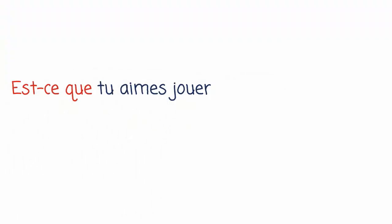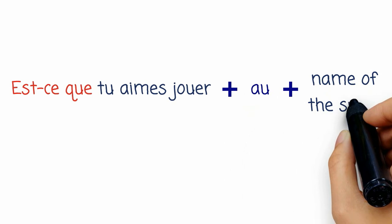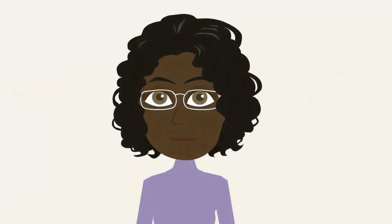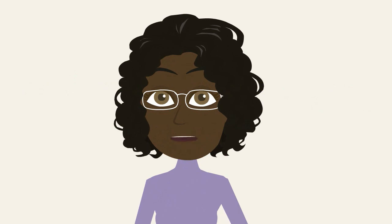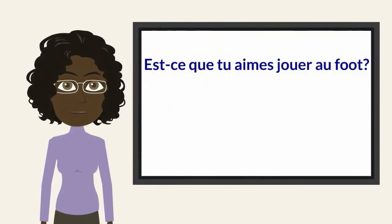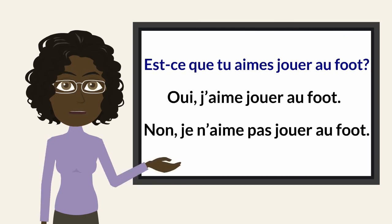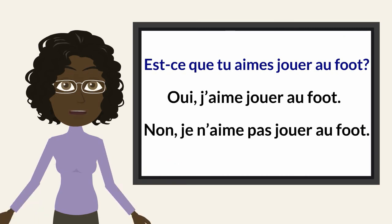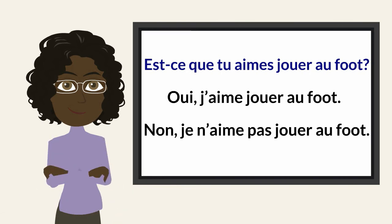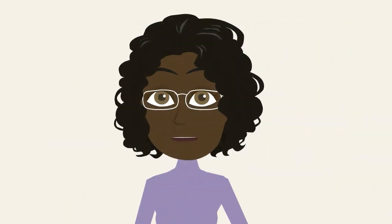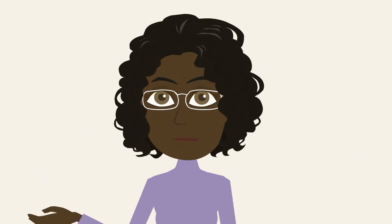Est-ce que tu aimes jouer au [name of sport]? What about answering questions that contain tu aimes? To answer these questions, we can use j'aime or je n'aime pas, depending on whether the answer is positive or negative. Est-ce que tu aimes is also a great way to start a question — not just about sports, but about whatever someone likes to do.